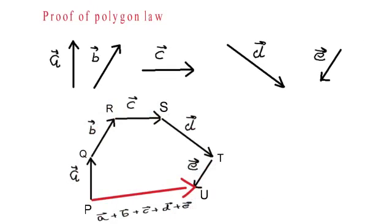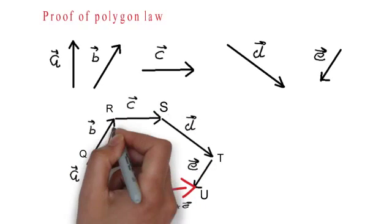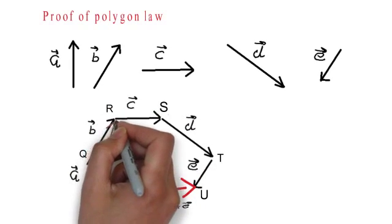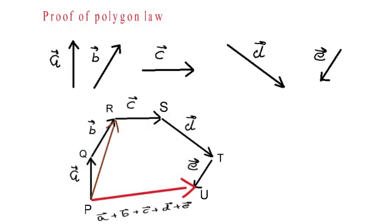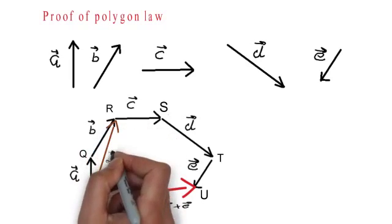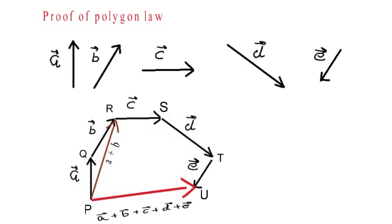In this polygon, if we look at the points P, Q, R, they form a triangle. The side PR will be the vector sum of the sides PQ and QR, so PR vector will be equal to A vector plus B vector.